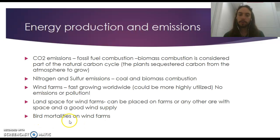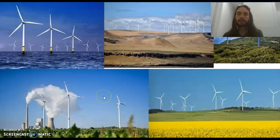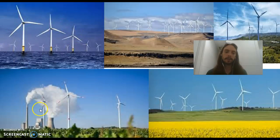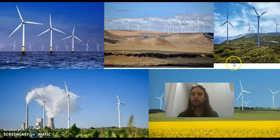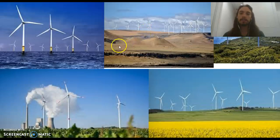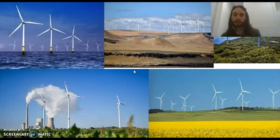One thing people bring up is bird mortalities on wind farms — yes, birds do die on wind farms, but that's fake news as a major concern. Wind farms can be placed in many locations: oceans, near coal plants, meadows, forested cliffs, or deserts. The main challenge is getting long power lines to transfer that energy to certain systems.